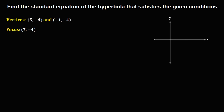From the given vertices, the first vertex has x equal to positive 5 and y equal to negative 4, so we count to 5 along x and negative 4 along y. This is the first vertex. The second vertex has x equal to negative 1 and y equal to negative 4.